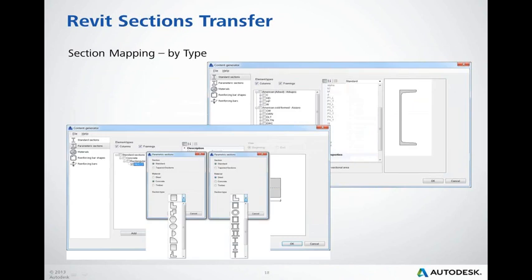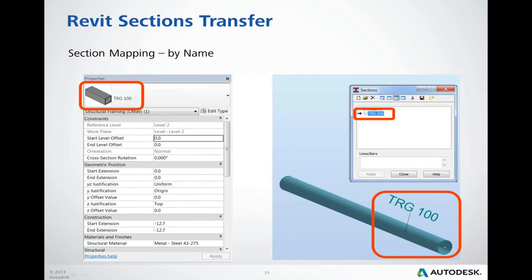Section shapes can be transferred between Robot and Revit in three ways. First, by type mapping: standard database sections, Revit standard sections, TPI concrete sections, and Robot parametric sections are automatically mapped to the correct corresponding section in the target program by the content generator module — this process is automatic and not visible to the user. If the section is an arbitrary section not recognized by the content generator, it can be mapped by name: sections of the same name should be created in both programs and matching is done automatically. Section shape may be irrelevant in such situations.